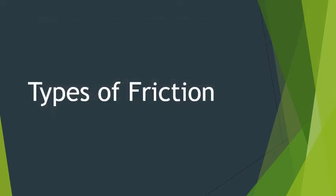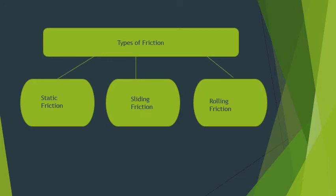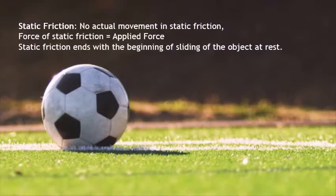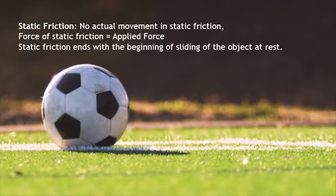Now, let us discuss the various types of friction: static friction, sliding friction, and rolling friction. What is static friction? The friction between two solid objects that are not moving relative to each other is called static friction. No actual movement is observed in static friction, and static friction is always equal to the force applied. It ends with the beginning of sliding of the object at rest.